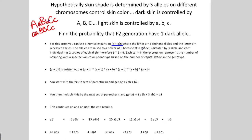In examples with two alleles, two times two gives four, so you would do a binomial expansion to the fourth power. Each term in the expression is going to represent the number of offspring with that particular skin color shade. Remember that shade is something you can see, which is why it's referred to as the phenotype.